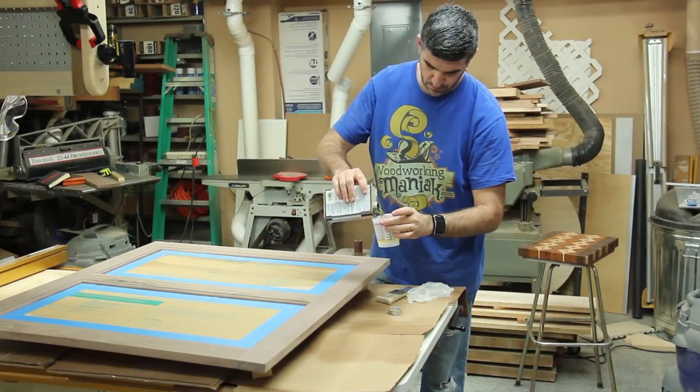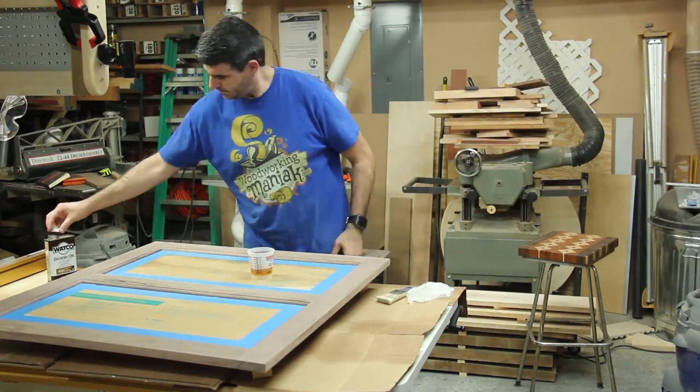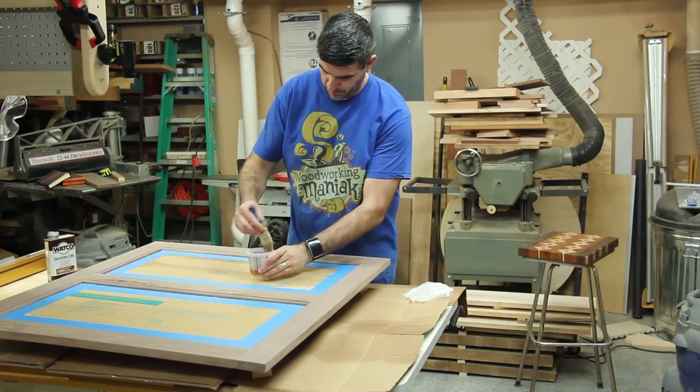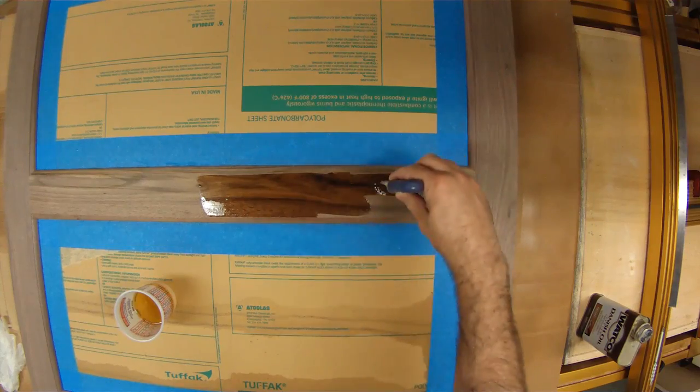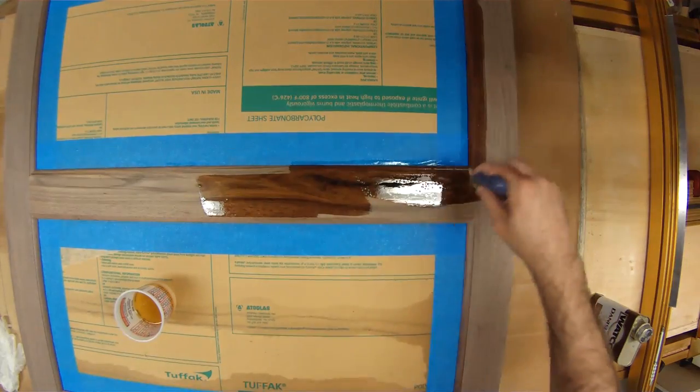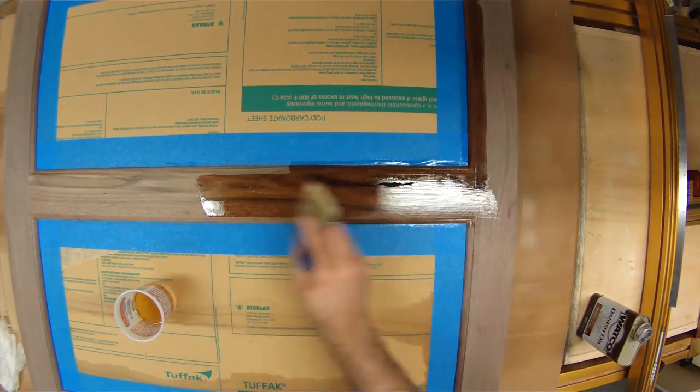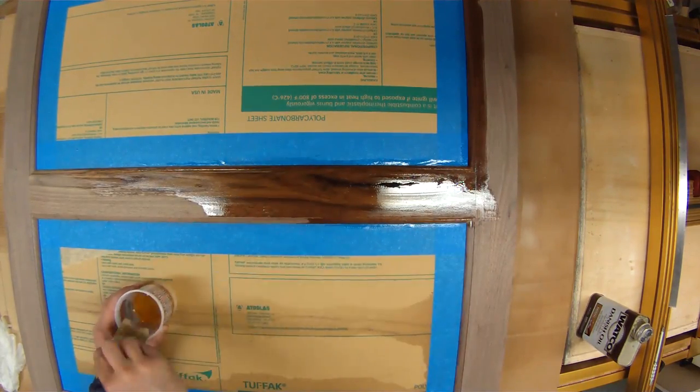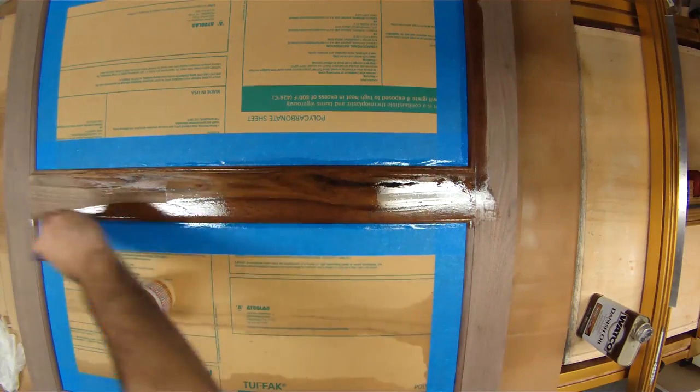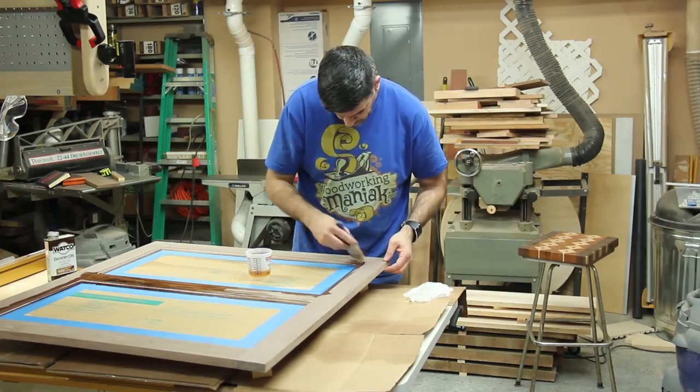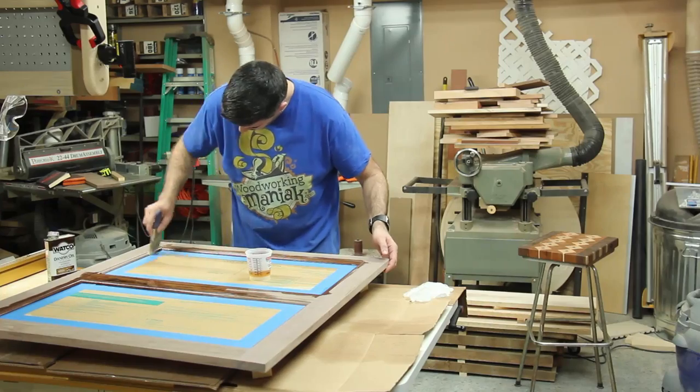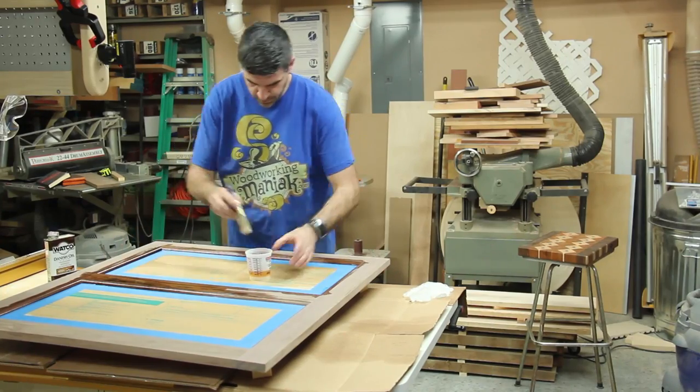For a finish I ended up going with Danish oil. Just brushed it on and I was very liberal with the amount of Danish oil I put in there. After it dried for a little bit I ended up applying a second coat and that's pretty much all I did with it. I just did the two coats and it came out looking pretty good so I was very happy with it.